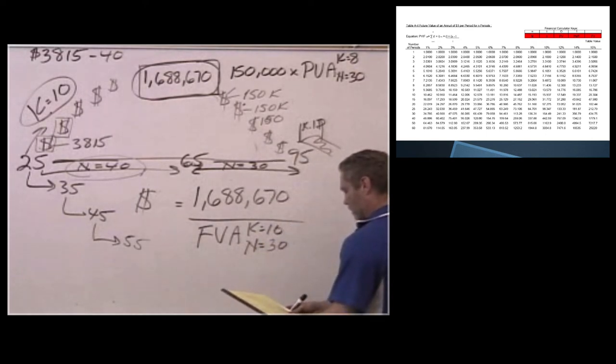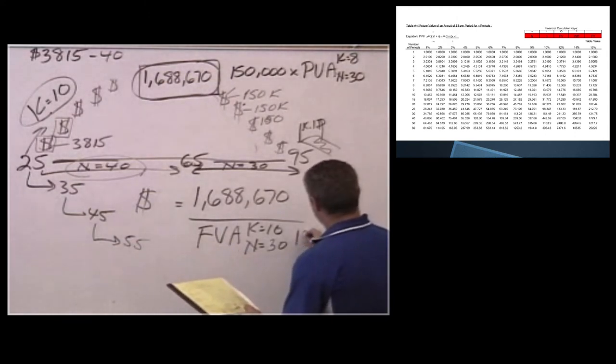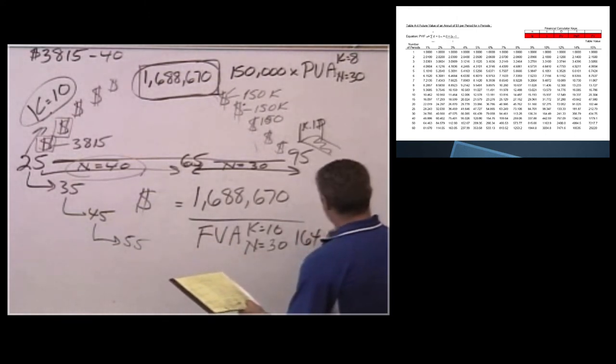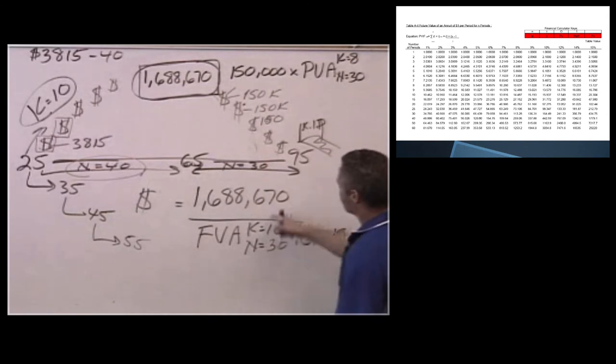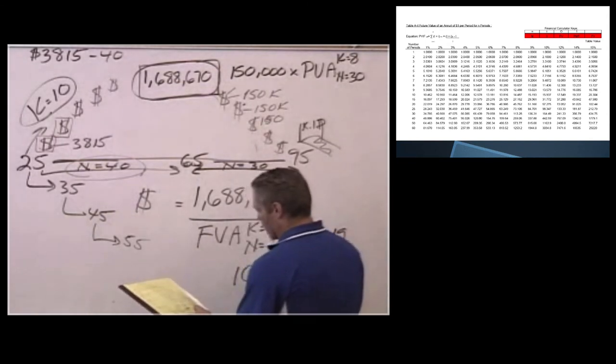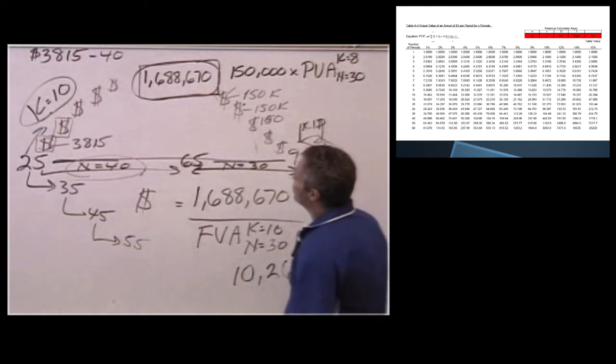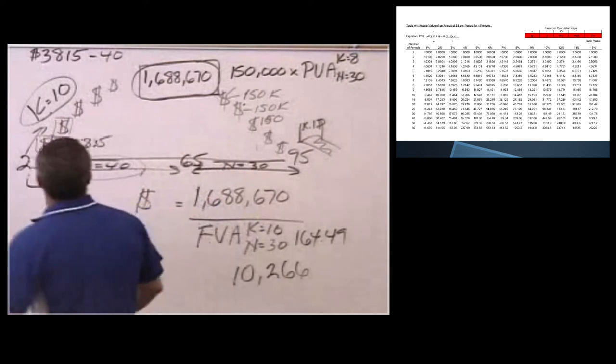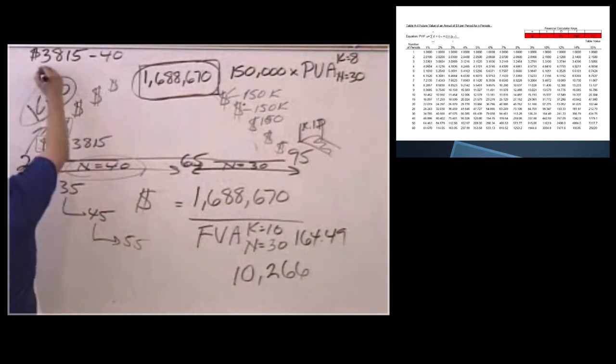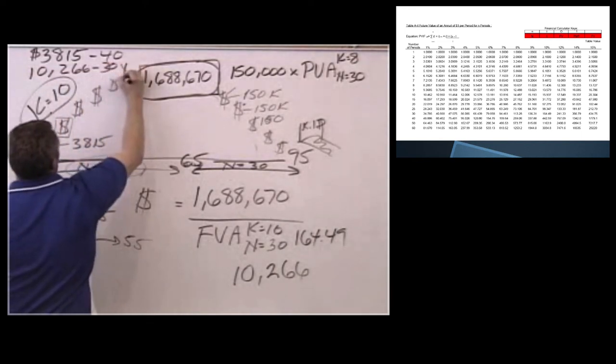But how much do we have to save if instead of starting at 25, we wait until you hit 35? So what happens over here in my formula, it all stays the same except N changes. So N goes from 40 to 30. And then we're going to look up that one. And our factor here is 164.49. I divide that in and I get a total amount that I need to save of $10,266. So I've almost tripled the amount of money I need at 30 years.